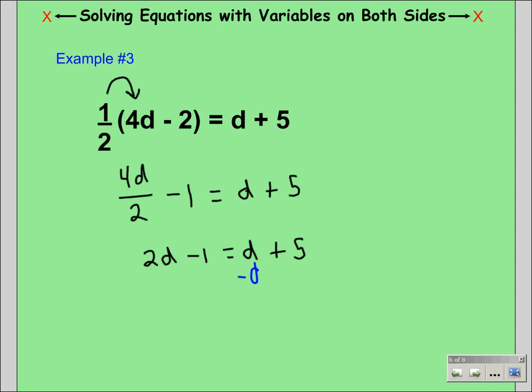To get rid of it, we'll subtract the d. We'll subtract the d over here also to keep it balanced. These d's will cancel out and we will have d minus 1 on the left side equals 5.